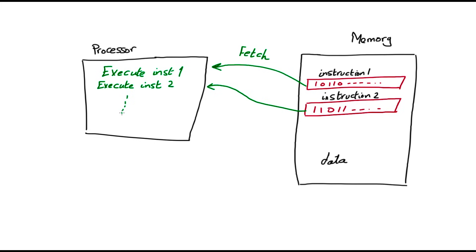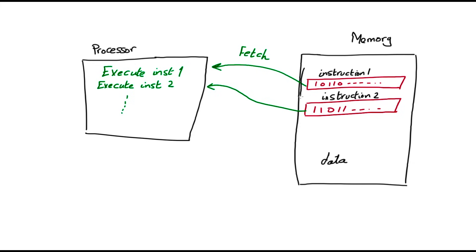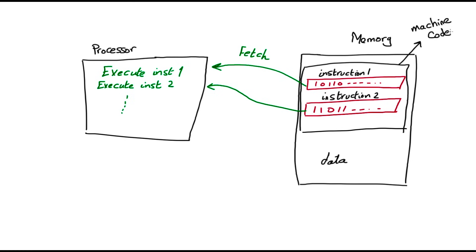This is what your processor is doing all the time — fetching instructions and executing them. Remember, these instructions are specific to the processor we're dealing with. We call the set of instructions stored in memory machine code. So from now on, when you hear the term machine code, you know it's just a bunch of ones and zeros representing instructions that the processor can understand.